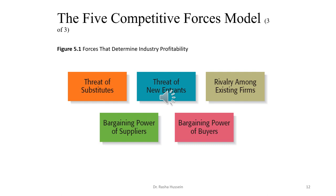The five competitive forces are: threat of substitutes, threat of new entrants, rivalry among existing firms (meaning competition), bargaining power of suppliers, and bargaining power of buyers. The coming slides will highlight and emphasize each of these five forces.